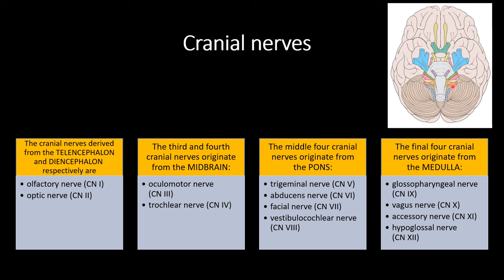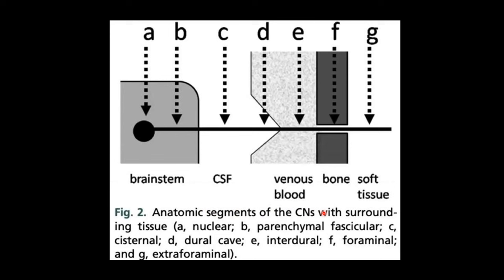Here are the anatomic segments of the cranial nerves with the surrounding tissue. Initially is the nuclear segment, then the parenchymal fascicular segment. Then comes the cisternal segment, which we see usually on a FIESTA sequence of MRI. Then comes the dural cave segment, then the interdural segment, and finally foraminal and extra-foraminal segments.